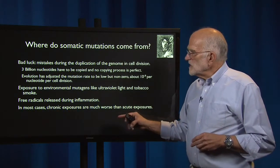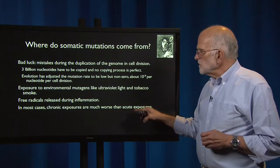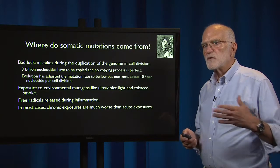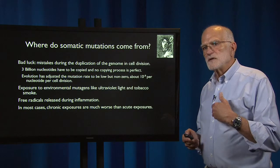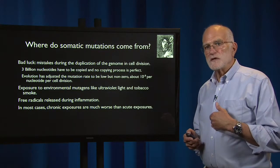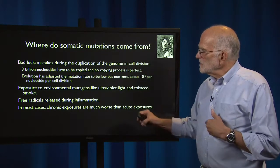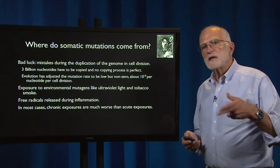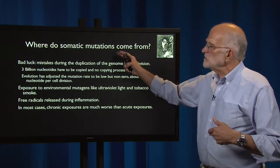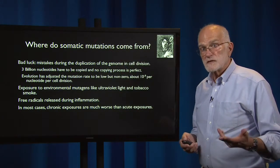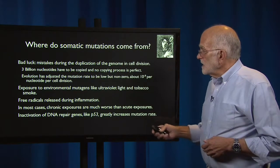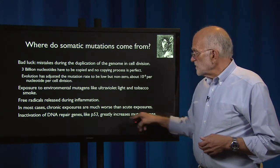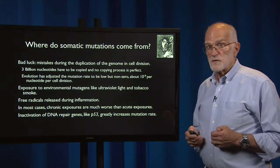In most cases, chronic exposure is much worse than acute exposure. Something like a long-term Helicobacter pylori infection in the stomach, which is making stomach ulcers, is going to provide chronic exposure, a lot of inflammation, and that can then lead to somatic mutation causing gastric cancer. Inactivation of a DNA repair gene like P53 greatly increases the mutation rate.